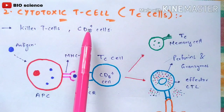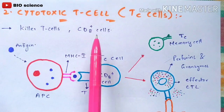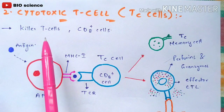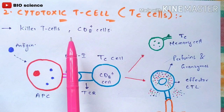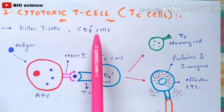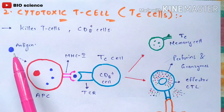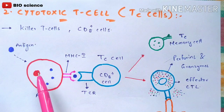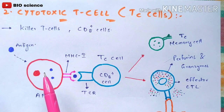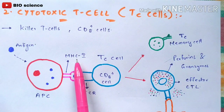Cytotoxic T cells are also called killer T cells and CD8 plus cells. They are called killer T cells because they are cancer-killing cells. The same process begins: an antigen enters the body from the external environment and is placed on the antigen presenting cell — also called the target cell or infected cell. This time, the antigen presenting cell has MHC class 1 molecules on its surface.